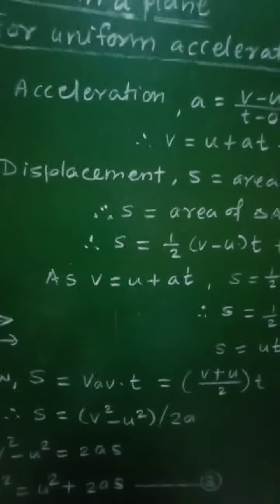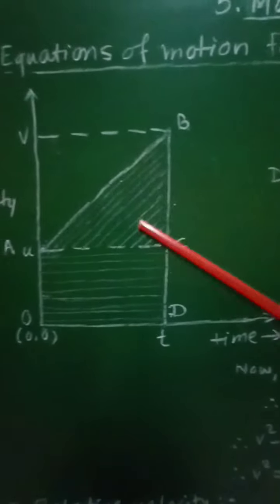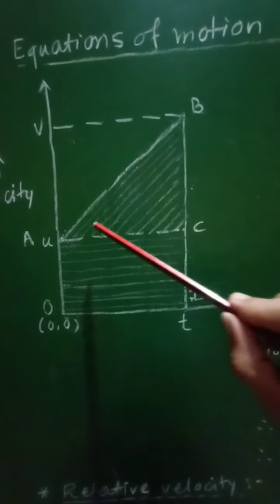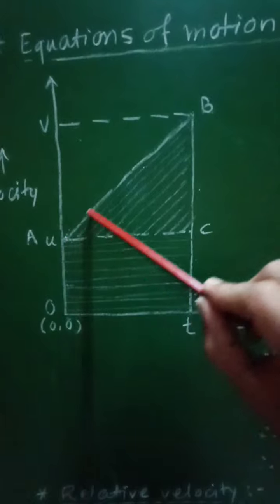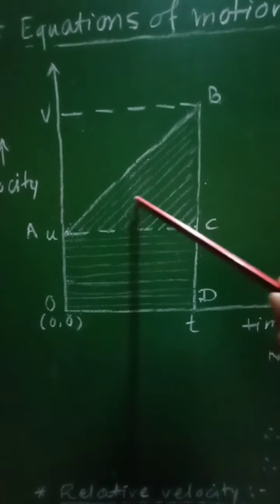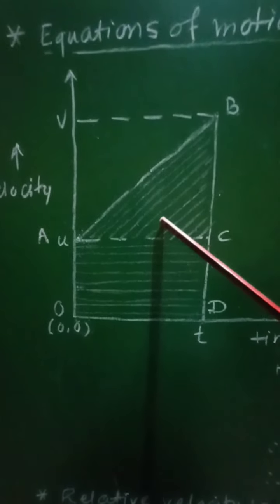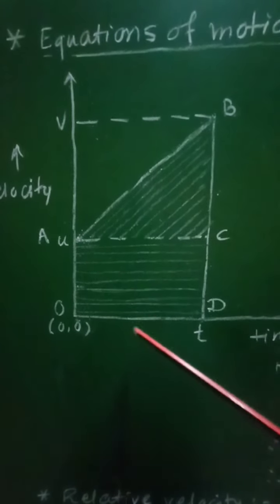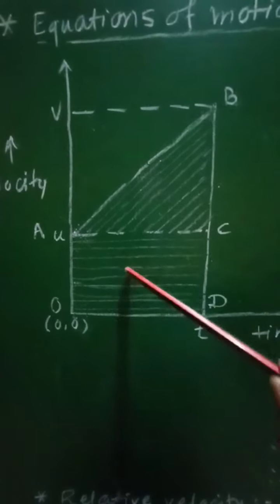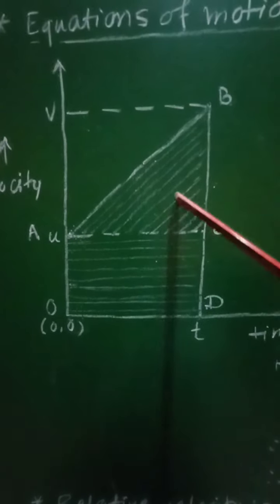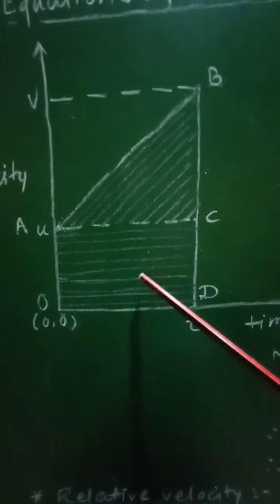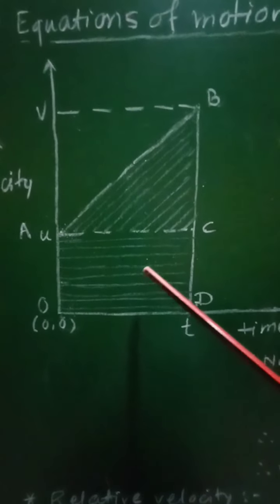As previously seen, for a velocity-time graph, the shaded region is the area under the graph of velocity against time. We know that the area under the velocity-time graph is the displacement of that object. Therefore, this shaded region — that is, the area of quadrilateral O, A, B, D — will represent the displacement of the object.